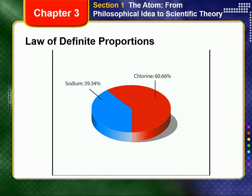Table salt, sodium chloride, always consists of 39.34% by mass sodium and 60.66% by mass chlorine, no matter how big the sample is or where it comes from.